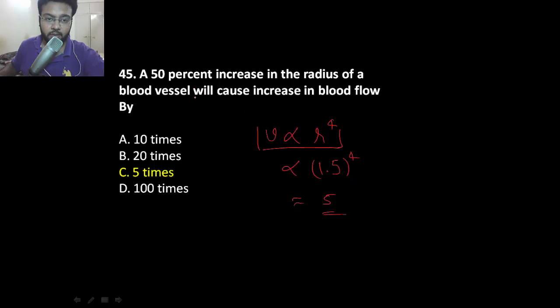Fifty percent increase in radius of a blood vessel will cause increase in blood flow by how much? It is given by Poiseuille's equation, and it says that velocity is directly related to radius to the fourth power. So we can calculate 1.5 raised to 4, which gives 5.